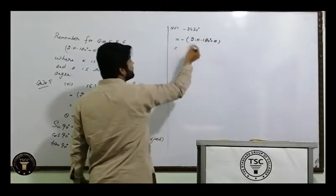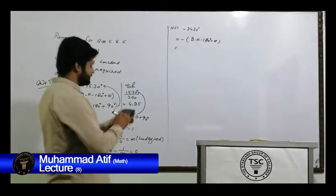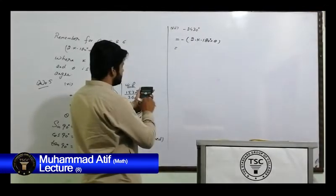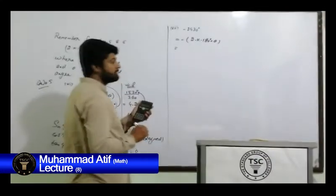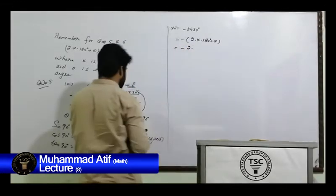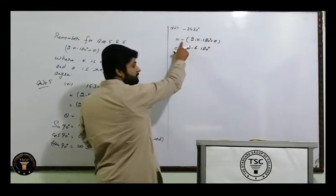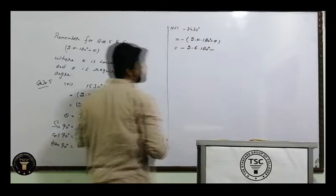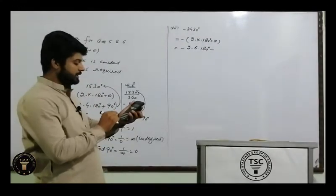K ki value find karne ke liye: 2430 divided by 360 = 6.75. Point se pehle jo hoga, woh k ki jagah apply kar do — so k = 6. Bahar minus hai, sign change hoga. 2·6·180 = 2160. Ab 2160 mein kitna add karein ki 2430 aaye? Difference: 270 add karna parega. Theta = 270, but bahar minus hai, so angle = minus 270°.